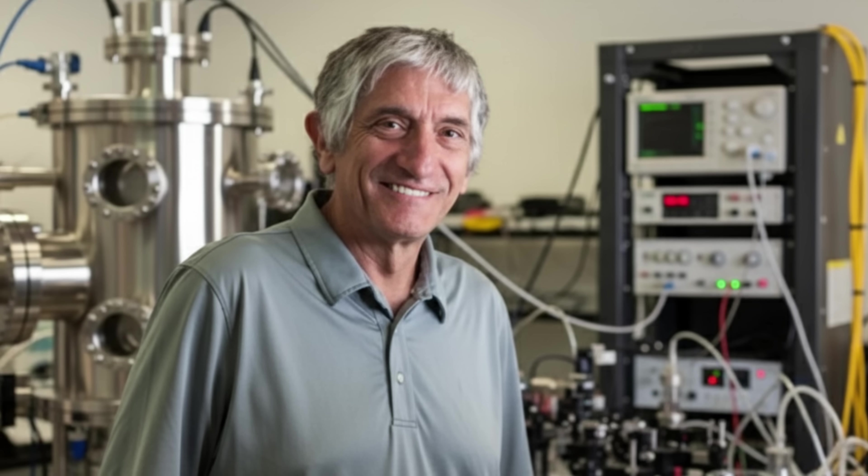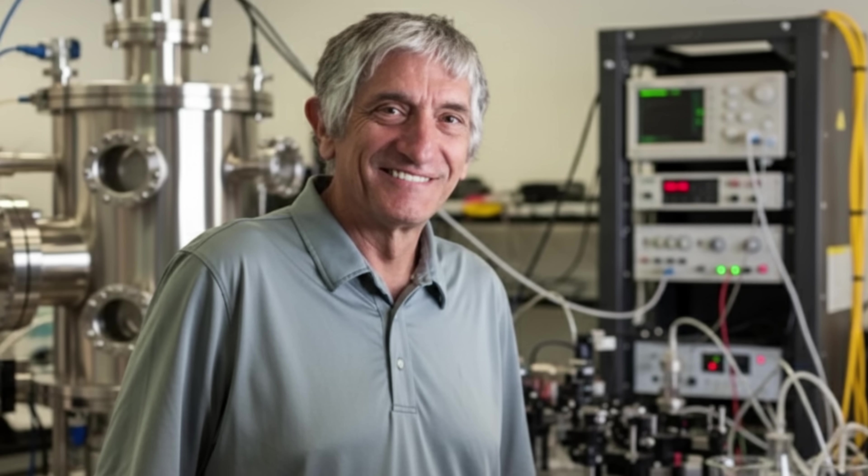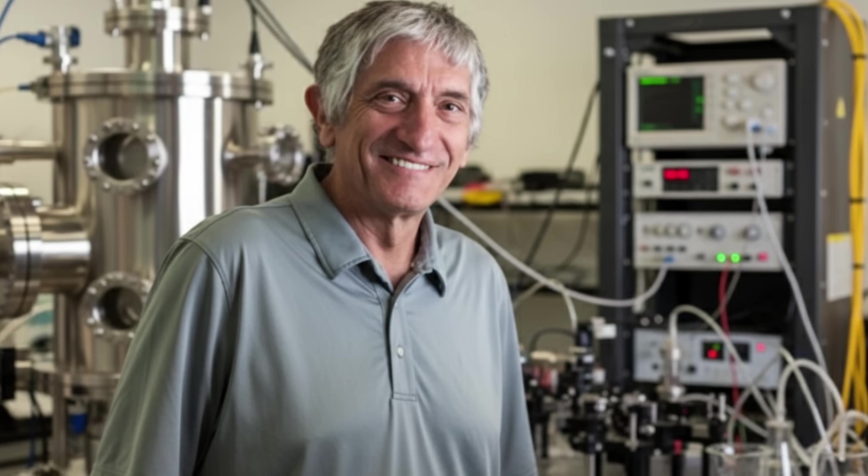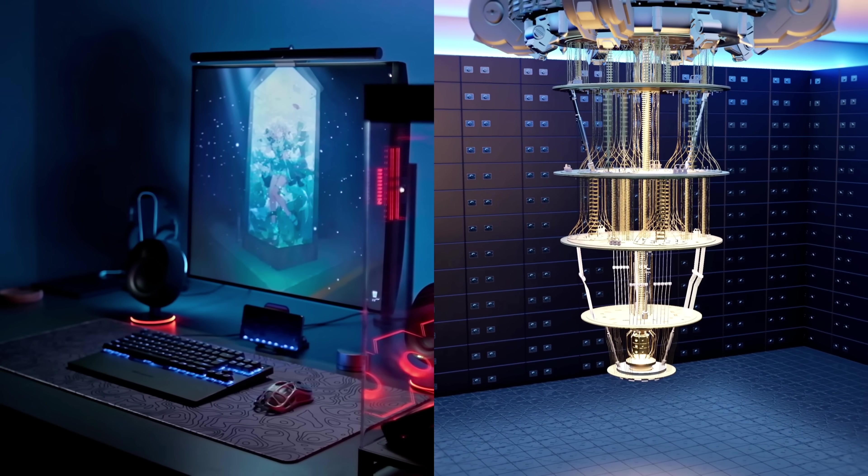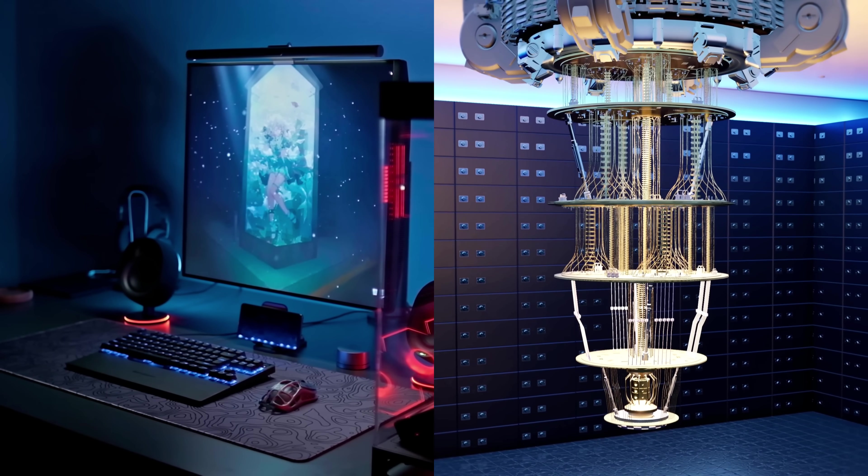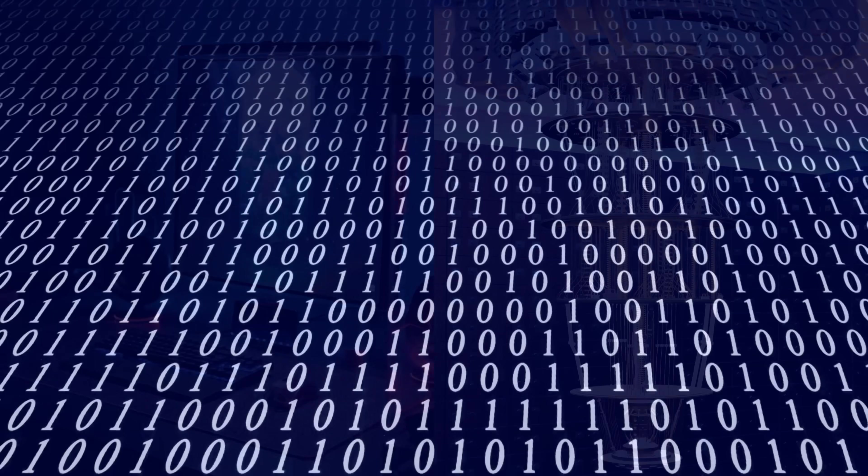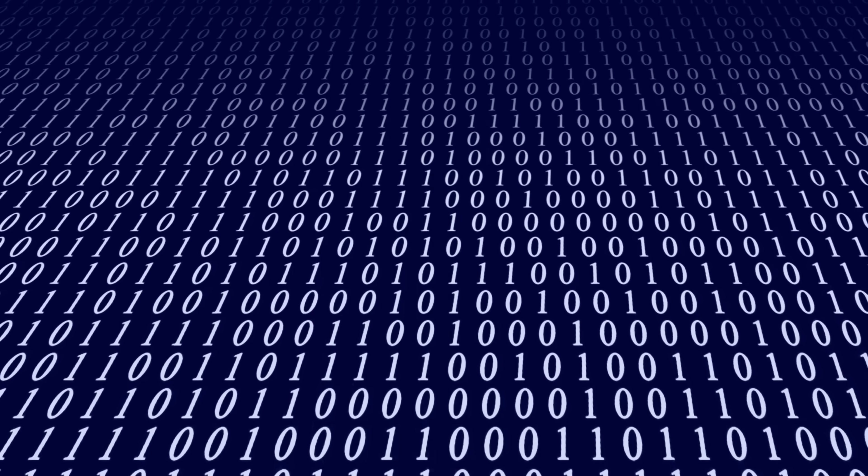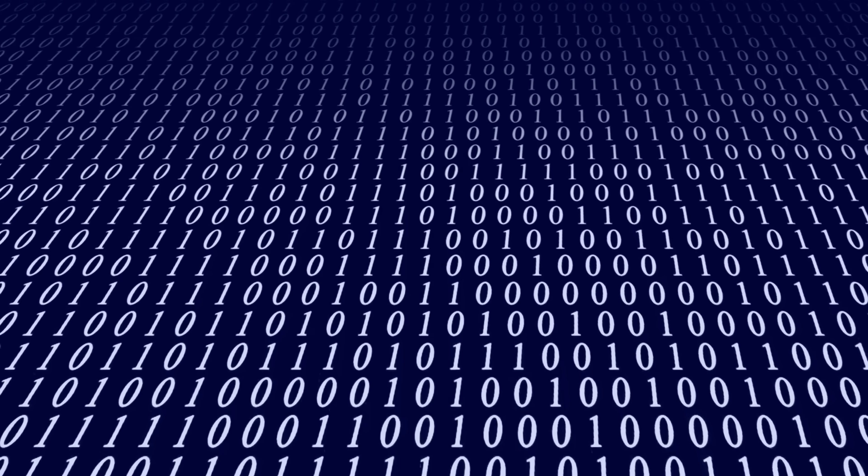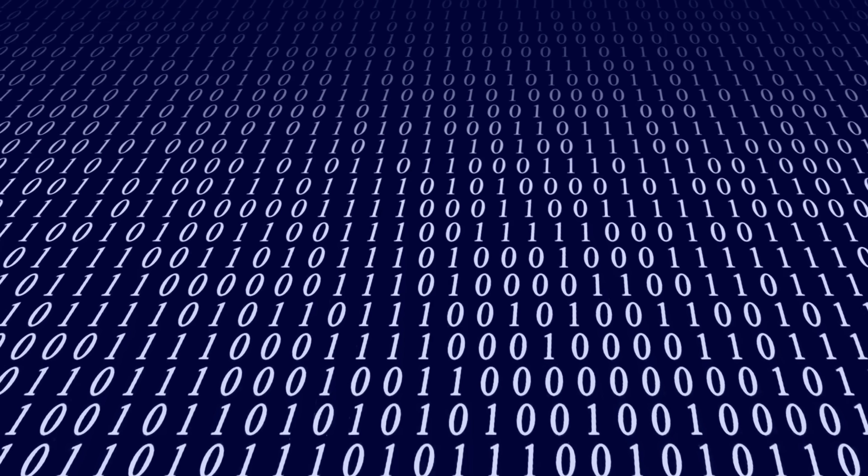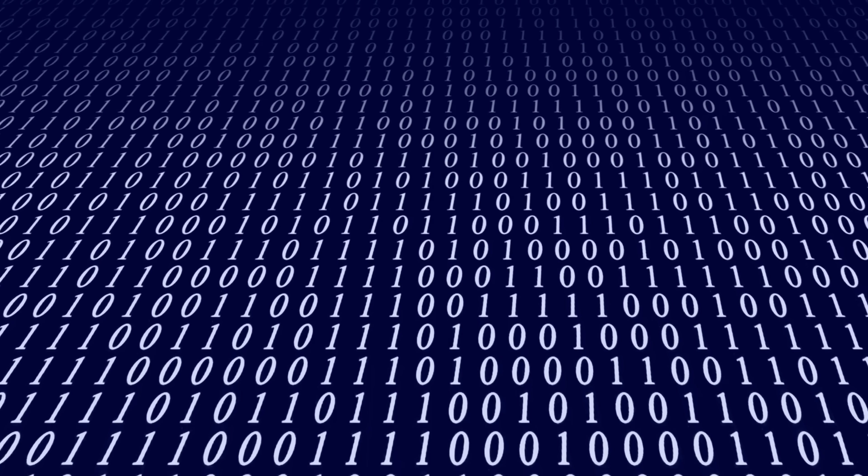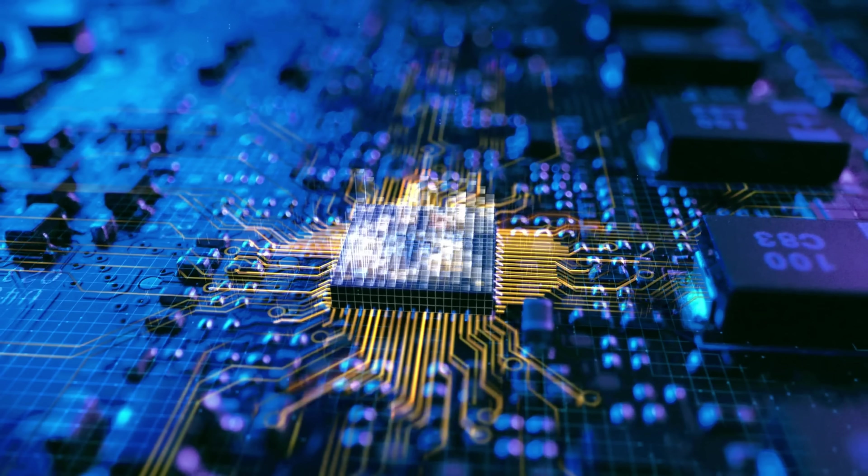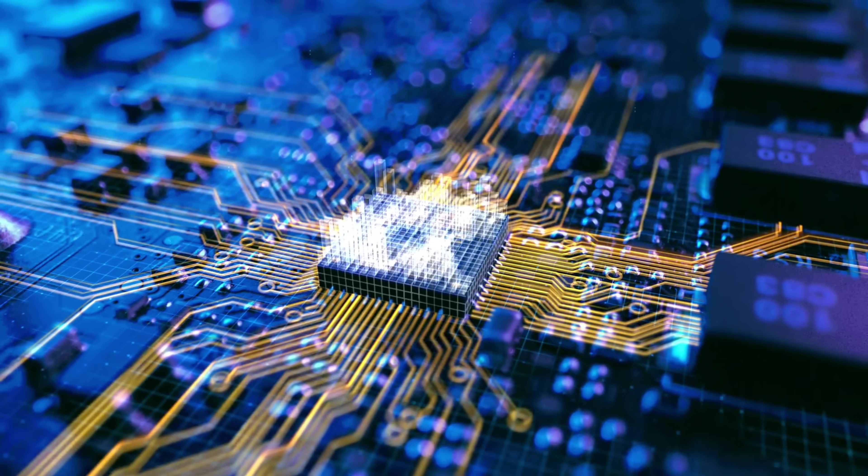To get what Martinis and his team achieved, you need to start with the basic difference between a regular computer and a quantum one. A classical computer thinks in bits. A bit is like a light switch. It can be either on, represented by a one, or off, represented by a zero. There is no in-between. All the complex operations of a modern computer boil down to manipulating billions of these simple, definite states.